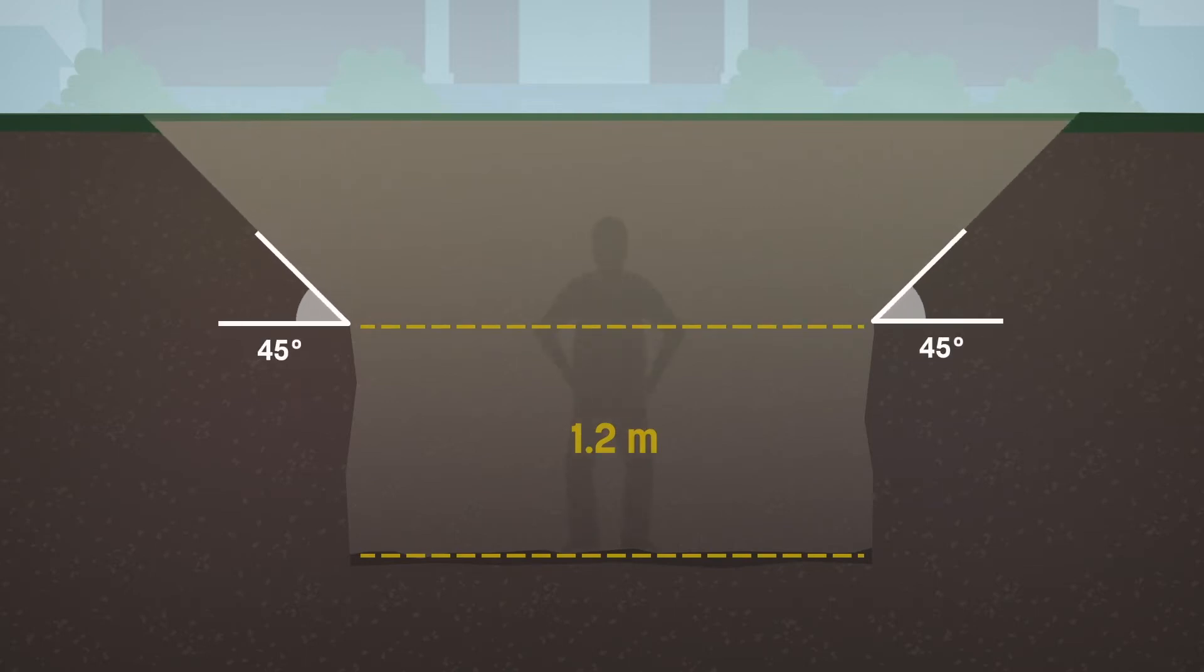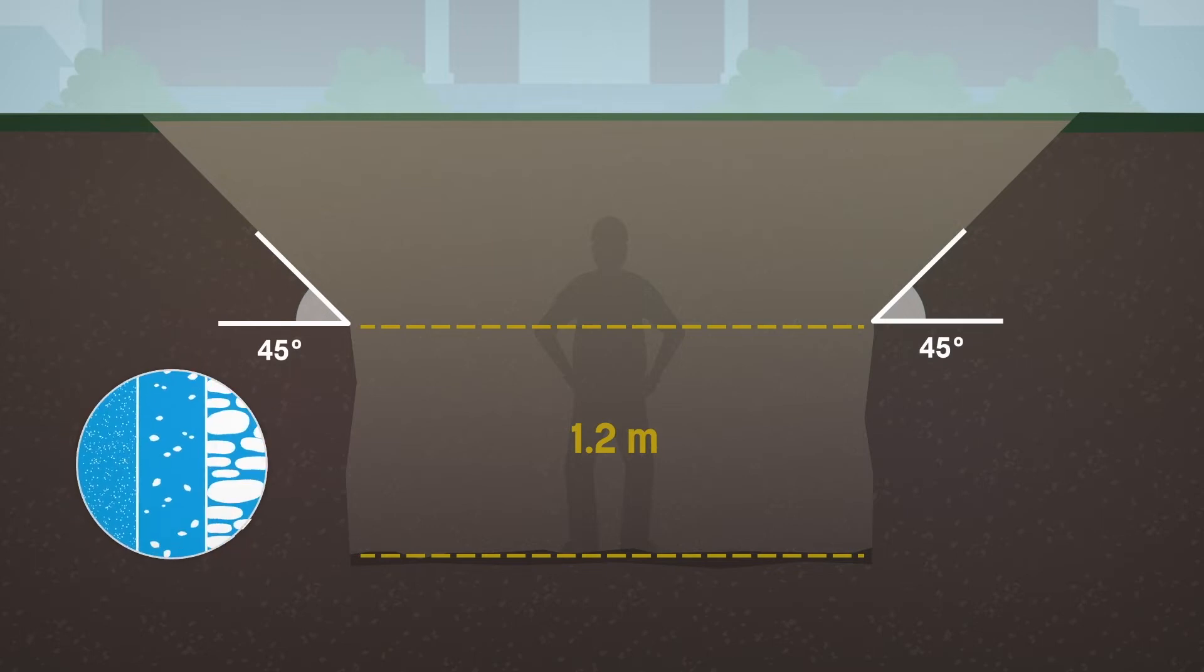For all other soil types, within 1.2 meters of the bottom, a slope of 45 degrees is generally sufficient. But sometimes, due to its composition, soil can be less stable and the slope must be less than 45 degrees.